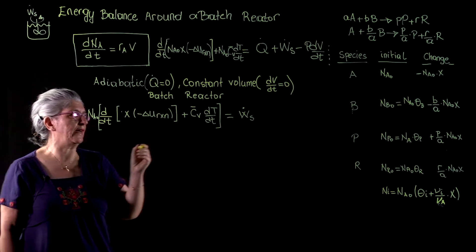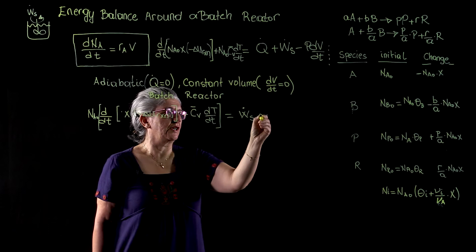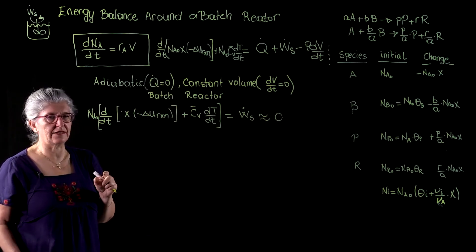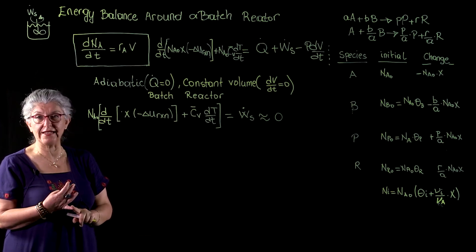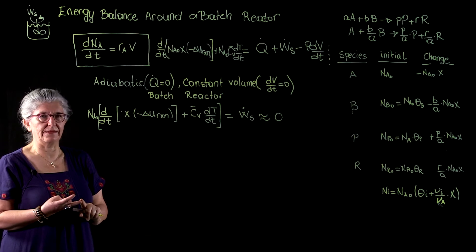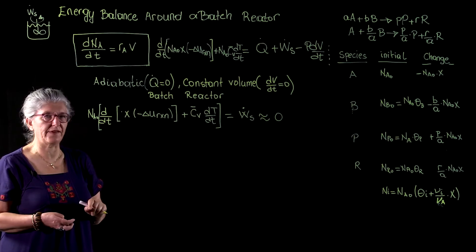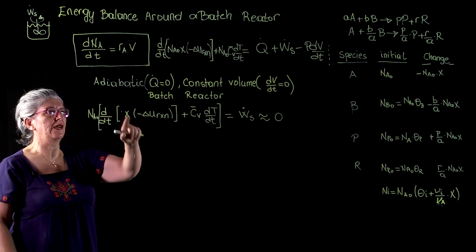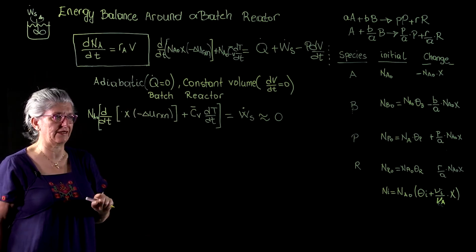So for the sake of the first example, I will approximate the shaft work negligible in comparison to the other components. I did not specify whether I have a gas phase reactor or a liquid phase reactor. None of these were specified. This is just the general energy balance we are solving for an adiabatic and a constant volume batch reactor.